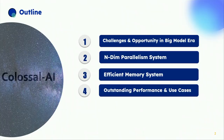Here's the outline of today's talk. First, I'll introduce the challenges and opportunities posed by big models. Second, we'll talk about our N-dimensional parallelization system and how it lets you use a variety of parallelization schemes to map your AI training to parallel platforms. Third, we'll discuss our efficient memory system. And finally, we'll highlight speed-ups on important problems like ChatGPT, AI-generated content, and AI for science — sometimes up to 10x compared to previous approaches.